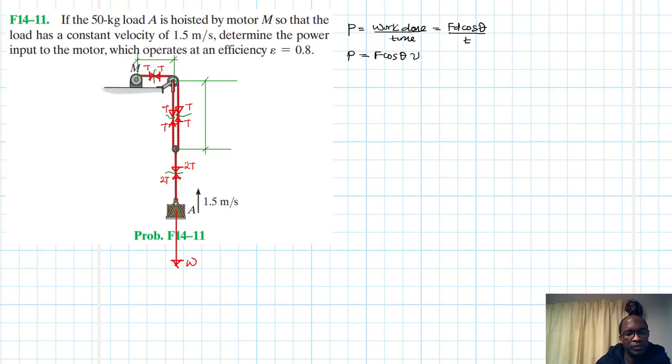There we go. So let's call this as SA. Then let's call this as SM. So we'll have SM plus 2SA equal to L. Therefore VM plus 2VA equal to 0. We have VA equal to 1.5.